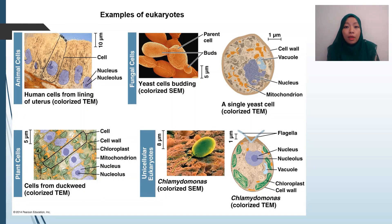These are examples of eukaryotes. This is an animal cell — specifically human cells lining the uterus. This is a plant cell from elodea. This is a fungal cell, which is yeast. And this is a unicellular eukaryote, which is chlamydomonas.